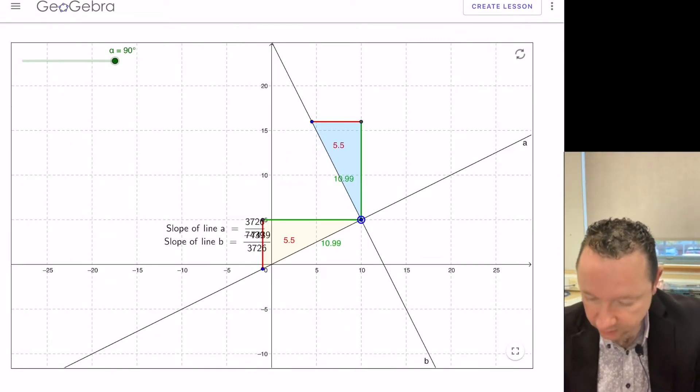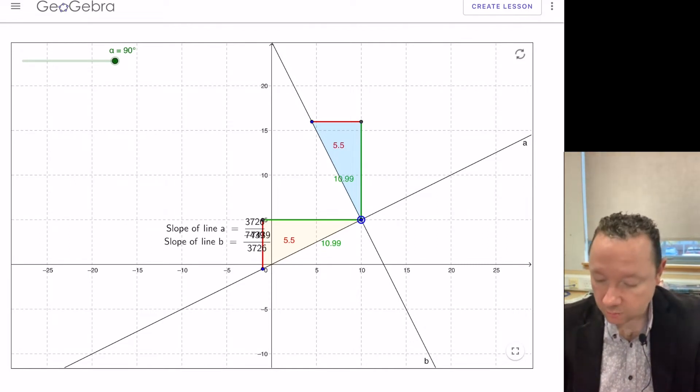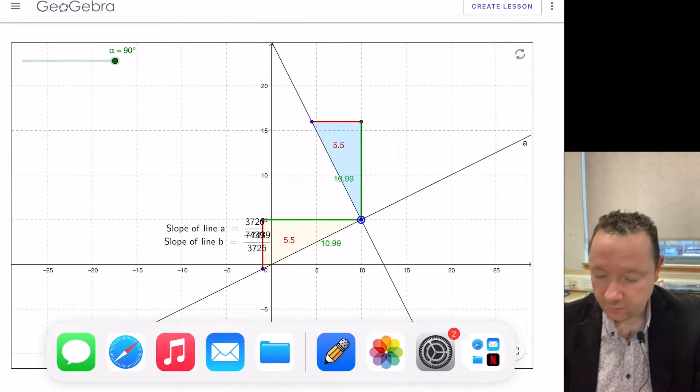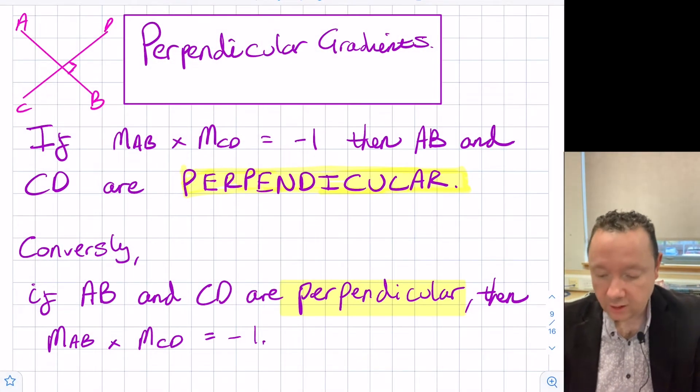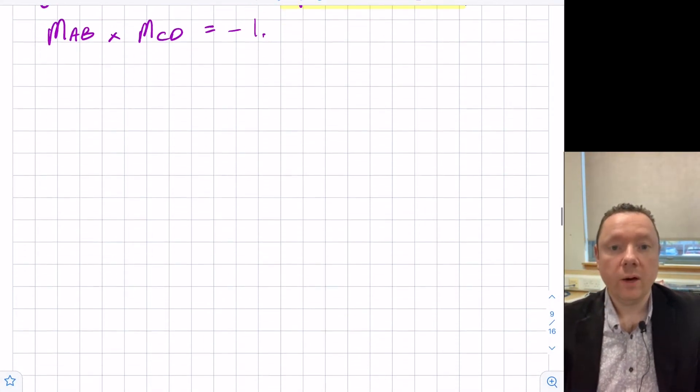If you look at these, you can see the gradient of the line sloping up the way is 5.5 over 10.99. The gradient of the line sloping down the way is minus 10.99 over 5.5. So essentially, these are called the negative reciprocals of each other, and they're quite easy to find.